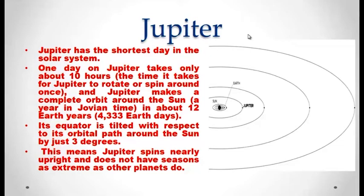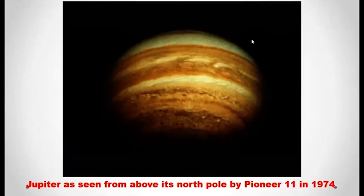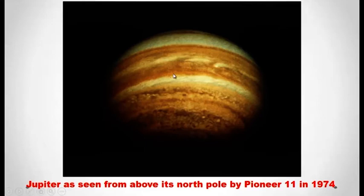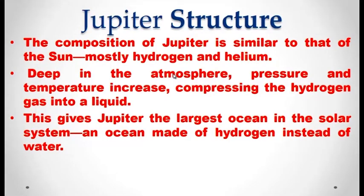This is another view of Jupiter taken in the year 1974 by the spacecraft Pioneer 11. This Jupiter image was taken from above its North Pole — a spectacular image which reveals the swells and bands of Jupiter. Jupiter is composed of mostly hydrogen and helium, as our sun has. Deep in the atmosphere of Jupiter, pressure and temperature increase, compressing the hydrogen gas into a liquid. This gives Jupiter the largest ocean in the solar system — an ocean made up of hydrogen instead of water.